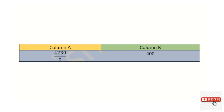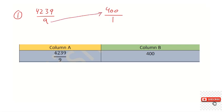Regarding question number seven, we have two methods. First method: write 4239/9 and 400/1 as fractions, then cross-multiply. 9 times 400 gives 3,600 and 1 times 4,239 gives 4,239. Of course 4,239 is the greatest. Second method: consider the denominator 9 as approximately 10, so 4,239 divided by 10 is 423.9, and 423.9 is clearly greater than 400.